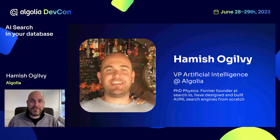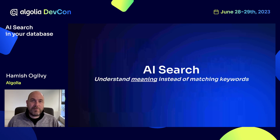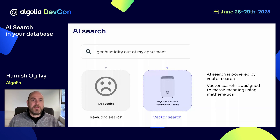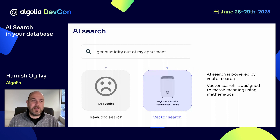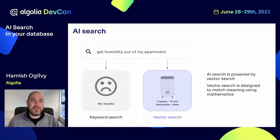My background was originally in physics designing lasers, but more recently I've been spending time on AI and ML-powered search. AI search is about understanding meaning instead of matching keywords. The way to think about it is keyword search is like matching indexes in the back of a book, whereas AI search tries to match the meaning. You're turning text into mathematics and trying to match on the actual meaning instead of just matching on the word.